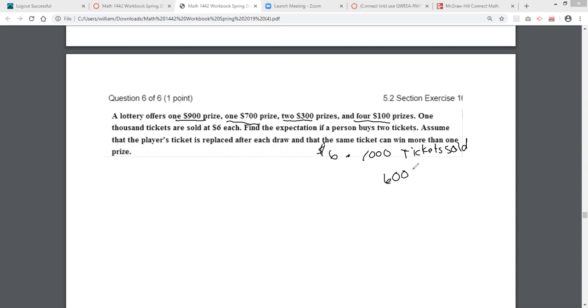So, they're bringing in, it's kind of cool, $6,000 in income. And if you look, just look at the side of it, they're going to give one prize for $900, one prize $700, two prizes for $300, and four prizes for $100. They're giving back $400, this is $600.